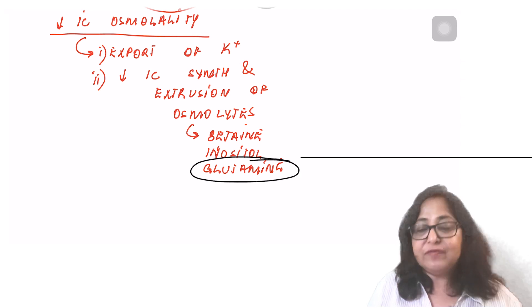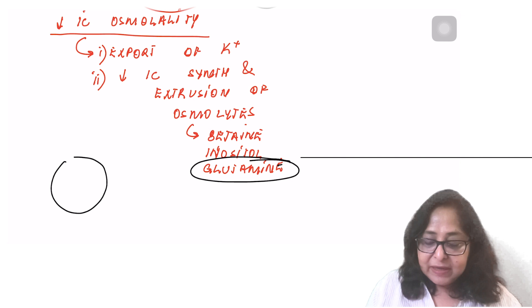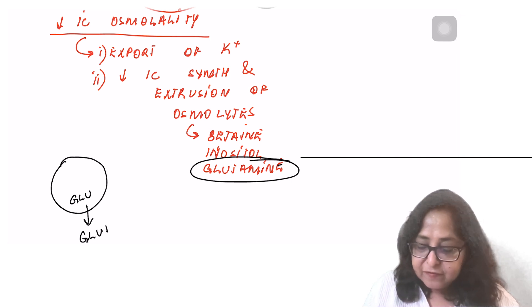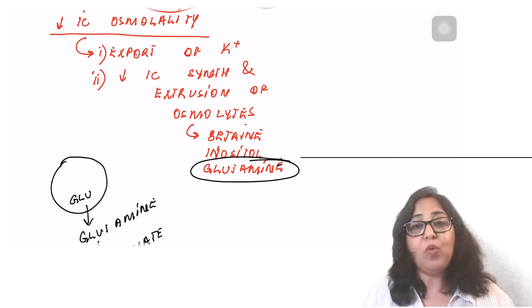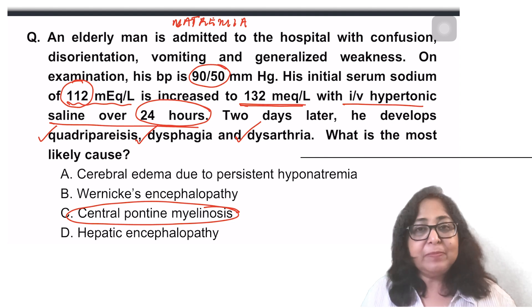One more clinical point. Because there is an extrusion of glutamine in hyponatremia, when glutamine moves out of the cells, it gets converted to glutamate. And glutamate is an excitatory neurotransmitter. This now precipitates seizures. Seizures are very common in patients with chronic hyponatremia.